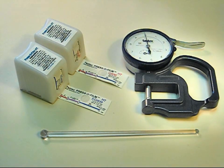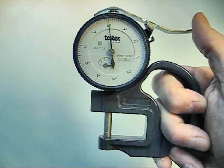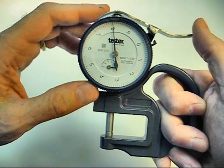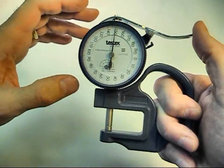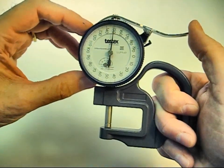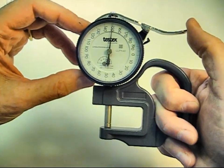Be sure the gauge is one that has been specifically designed for use with replica tape. A gauge measuring in thousandths of an inch, or mils, looks like this. A metric gauge measuring in micrometers, or microns, looks like this.